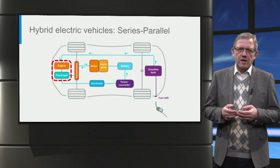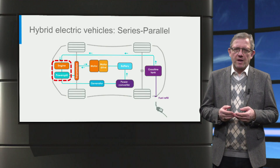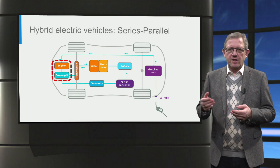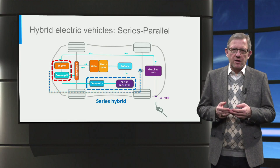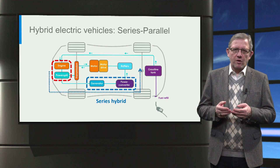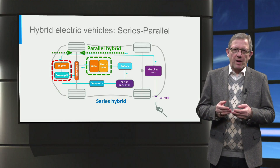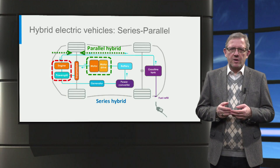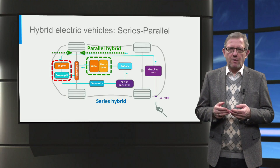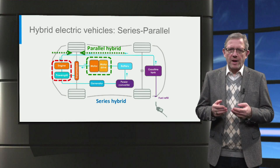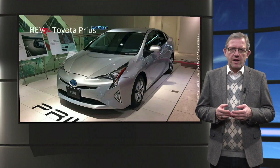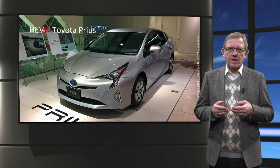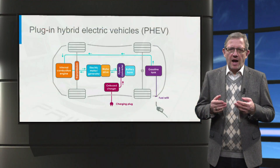The third type of hybrid is the series-parallel or dual mode hybrid. This has the flexibility to operate in either series or parallel mode by using a power split. It has a generator to charge the battery, as seen in the series hybrid, and it also has an engine and motor simultaneously powering the wheels, as seen in the parallel hybrid. Although this type of architecture is more flexible in terms of driving modes, it is also more complex and, of course, costly. The Toyota Prius is an example of a hybrid electric vehicle based on the series-parallel architecture.